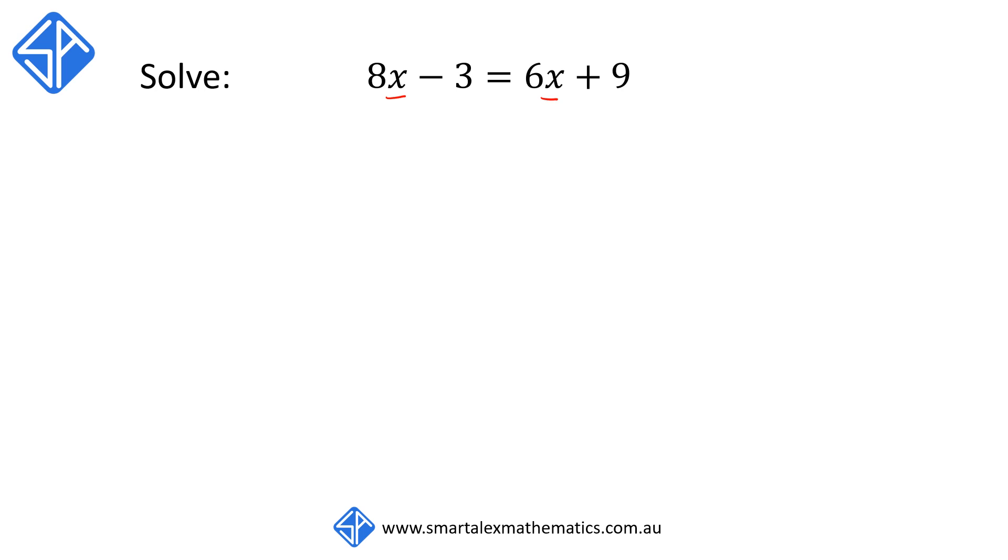What we're going to do is move the variable x onto one side, so I'm going to start off by subtracting 6x from both the left and the right hand side. The 6x term will disappear from the right. On the left hand side we now have 8x minus 6x which is 2x minus 3 is equal to 9.